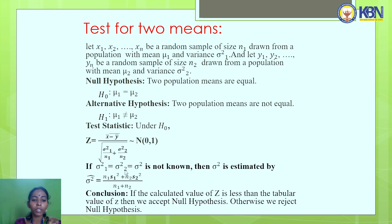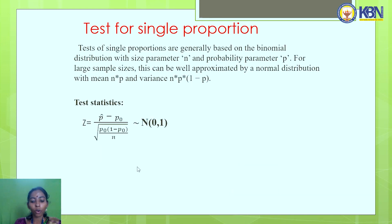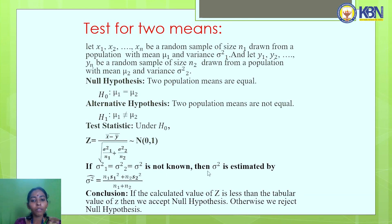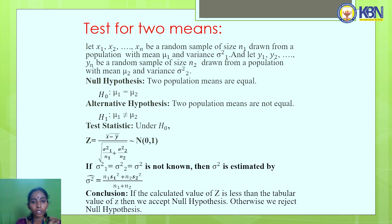If σ₁² = σ₂² = σ² and the common variance is unknown, then σ² is estimated by σ̂² = (n₁s₁² + n₂s₂²) / (n₁ + n₂). In the conclusion, compare the calculated Z with the tabular Z at the appropriate level of significance. If the calculated Z is less than the tabular Z, accept the null hypothesis that the two population means are equal; otherwise reject it and accept the alternative hypothesis.